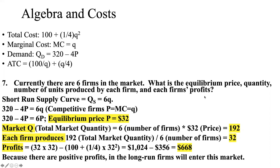Now let's determine the profits. Profits equal total revenue minus total cost. Total revenue is 32 times 32. We subtract total costs of 100 plus one-fourth times 32 squared, taken from the total cost curve. That gives us 1024 minus 356, so each firm earns a profit of $668. Because there are positive profits, in the long run additional firms will enter this market.